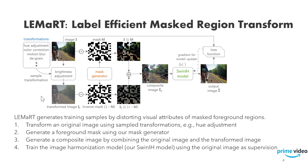Step 1: Lamart transforms an original image using sample transformations, for example, hue adjustment. Step 2: Lamart generates a foreground mask using our mask generator. Step 3: Lamart generates a composite image by combining the original image and the transformed image using the mask generated in Step 2. Step 4: We train our image harmonization model using the original image as supervision.